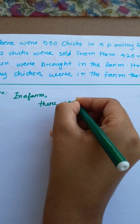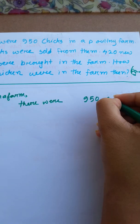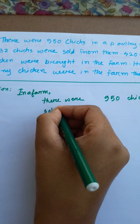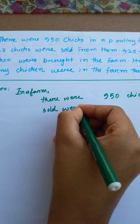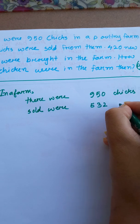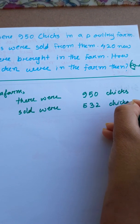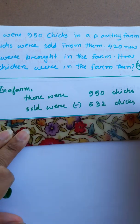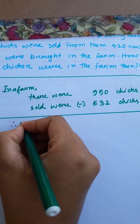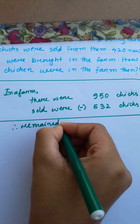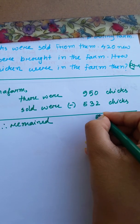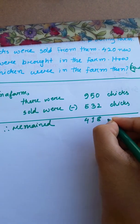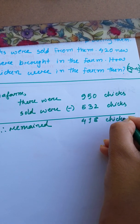In this farm, there were 950 chickens. Sold were 532 chicks. So, remained 418 chicks.